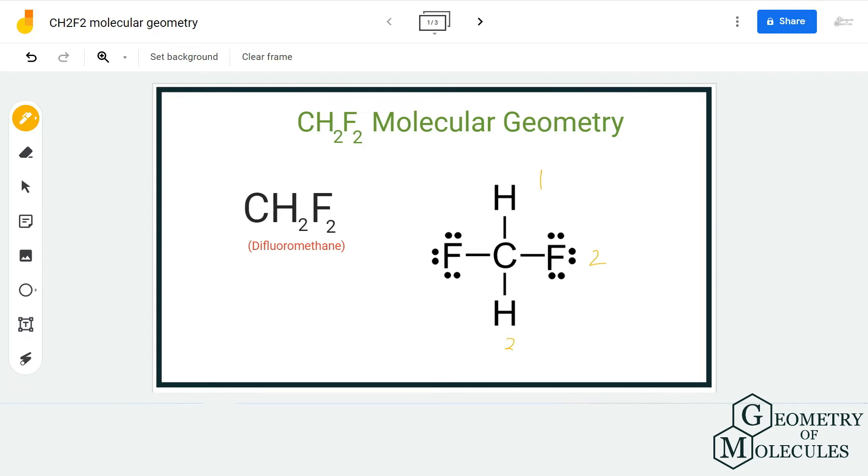Here, as carbon is forming bonds with four atoms, it has four electron regions. And as there are no lone pairs, the total number of electron regions will be four, which makes its steric number four.